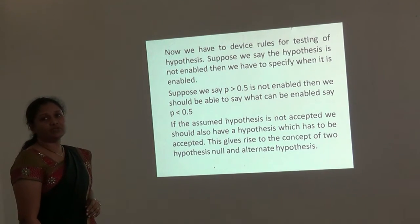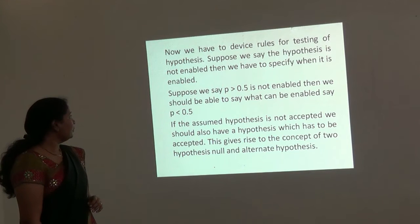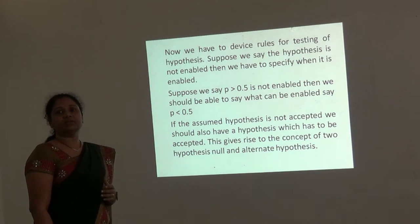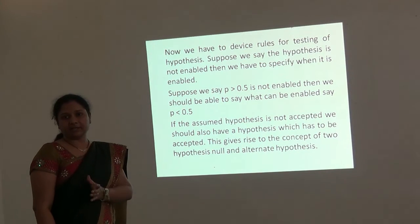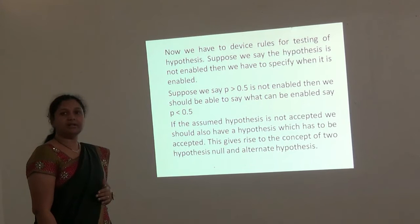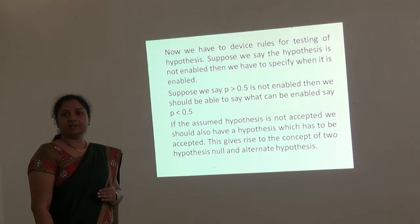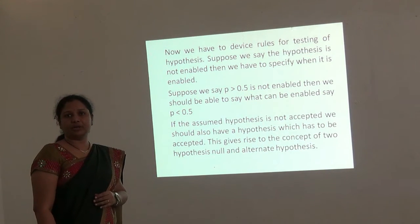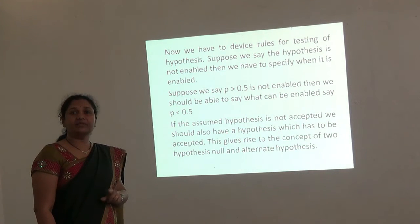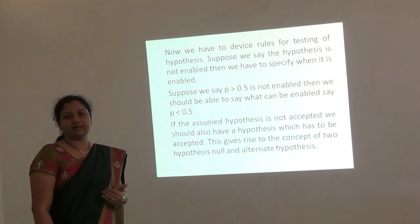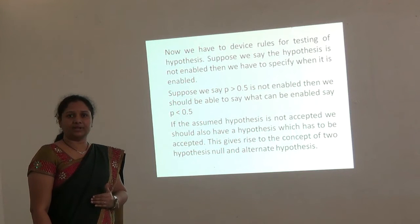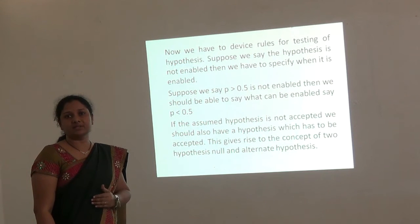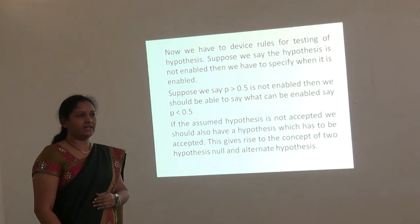We have to devise rules for testing of this hypothesis — whether it can be accepted. When we say a particular statement is accepted for a particular condition, we should also define when it is not accepted. For example, if we say P greater than 0.5 is not accepted, then we should specify when it is accepted, say P less than 0.5. This gives rise to two hypotheses: P greater than 0.5 and P less than 0.5. One will be null hypothesis and the other is known as alternate hypothesis.